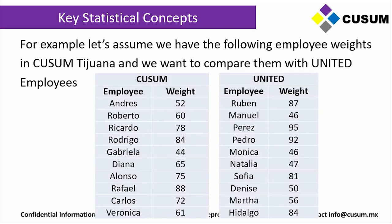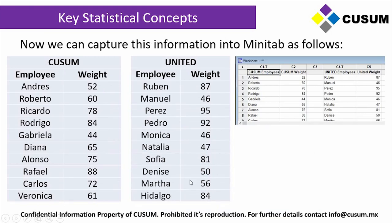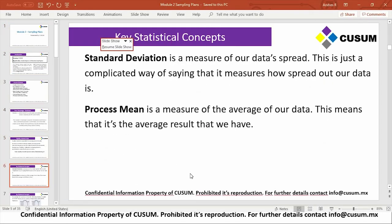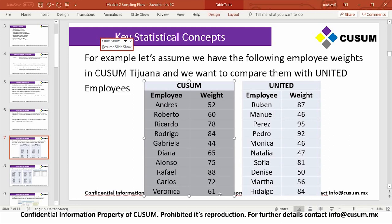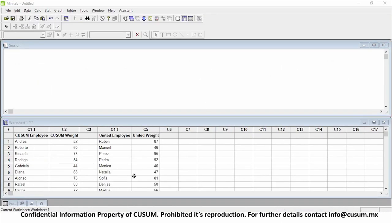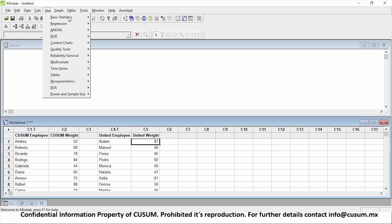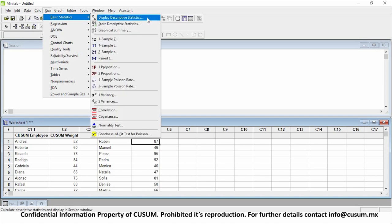Now we're going to look at an example. We have two tables — the first is the employee weight of every employee that Kuzum has, and the next is an employee weight table for United employees. We can capture this information into Minitab by copying it in, then clicking on Stat, Basic Statistics, and Display Descriptive Statistics.